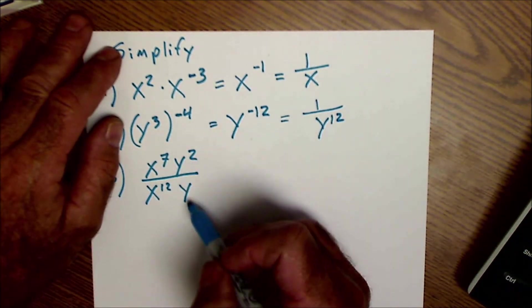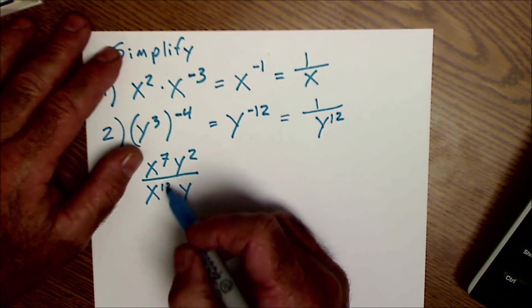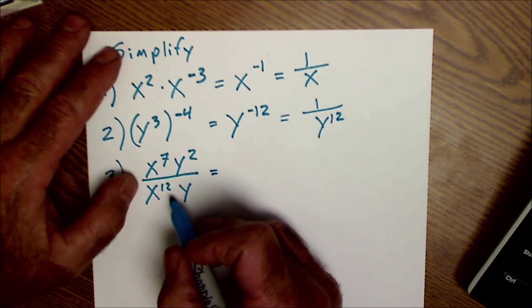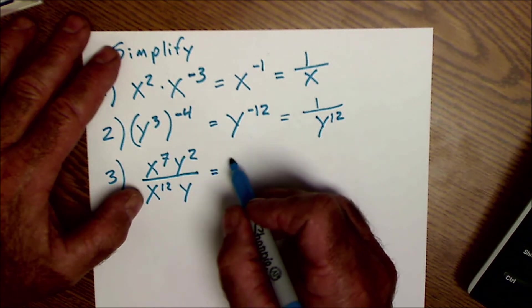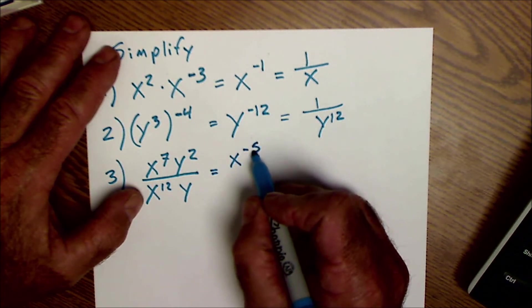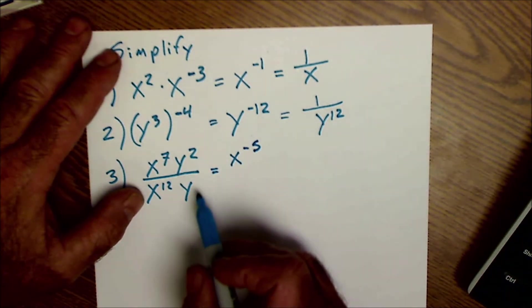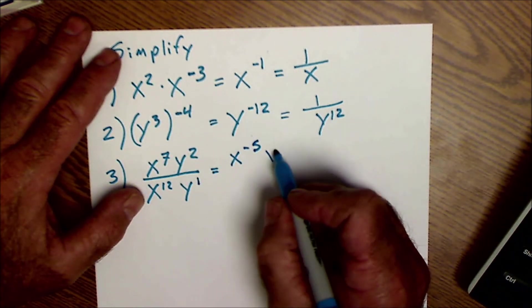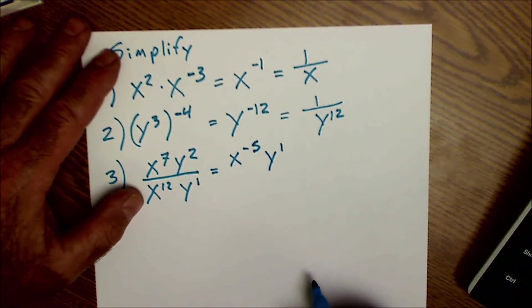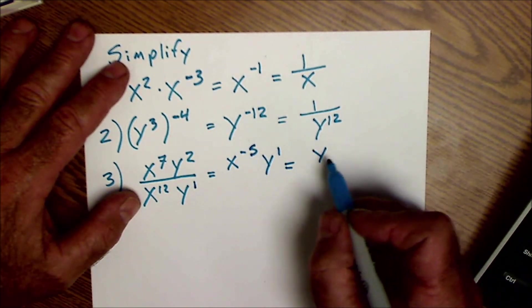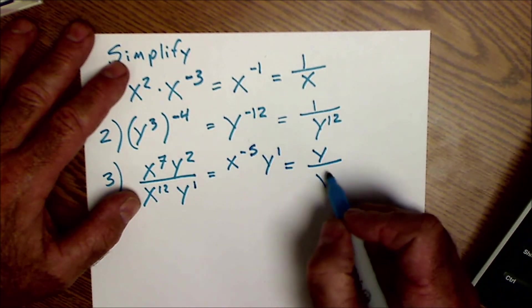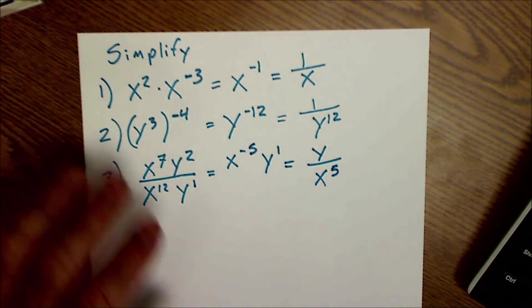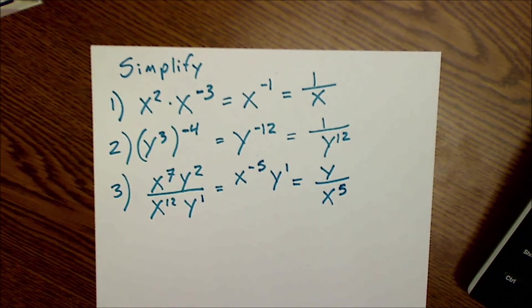And lastly, here I'm dividing, so I could subtract. So x to the seventh over x to the 12th would be x to the negative 5th. There's no number on here, so it's a 1. 2 minus 1 would be a 1. So I have x to the negative 5th, y to the first. Or to make it positive, I keep that y in the numerator, put that in the denominator. And that's how you simplify exponents.